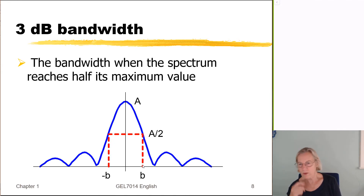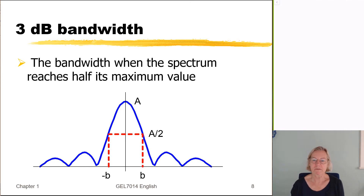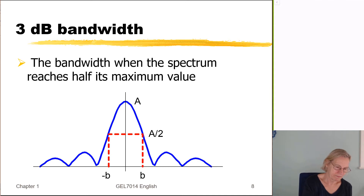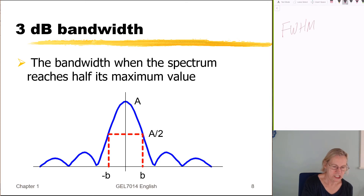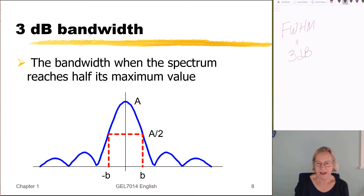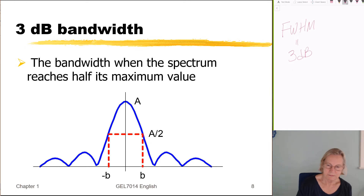This is also sometimes called the full-width half-maximum bandwidth — just another way of saying 3 dB — as illustrated in the diagram.